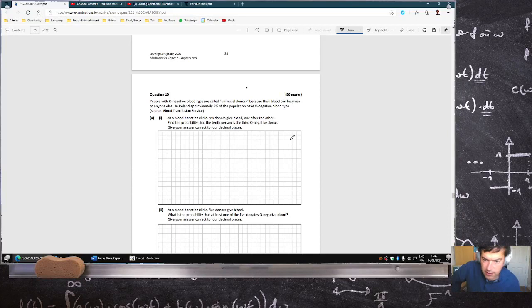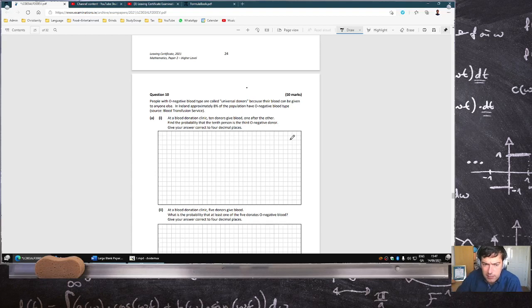People with O negative blood type are called universal donors because their blood can be given to anyone else. In Ireland, 8% are O negative blood. 10 donors give blood one after the other. The 10th person is the third O negative donor. This one again, so I've seen this before.